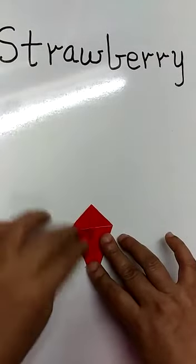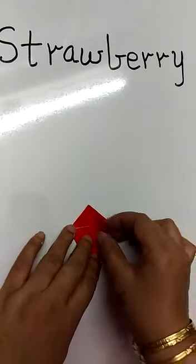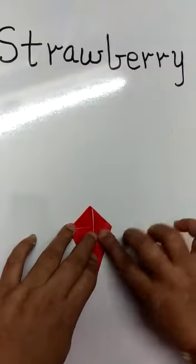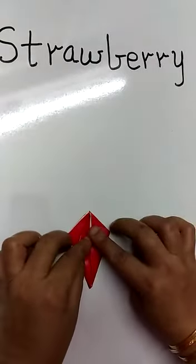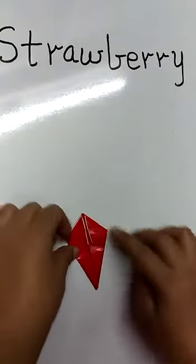Now the top portion also you have to fold. Make smaller triangles. The opposite side also the same. Turn it. Behind also you fold the same thing you do on the other side.